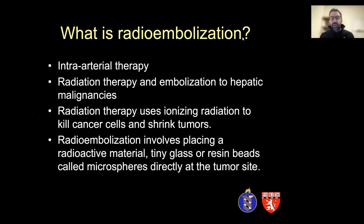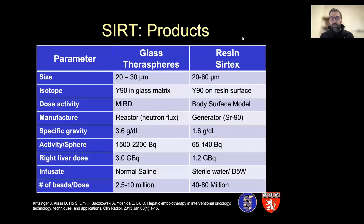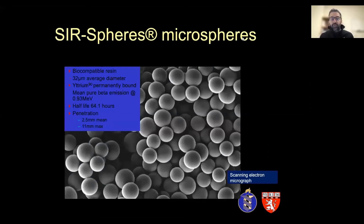Moving on to trans-arterial radioembolization — an intra-arterial therapy providing radiation therapy using a brachytherapy technique. The treatment goal is to selectively deliver a tumoricidal dose of beta radiation to the tumor while maintaining a low radiation dose to normal liver tissue. There are two types: glass microspheres and resin microspheres. Glass microspheres have a higher activity per sphere and are smaller; resin microspheres are larger with lower activity per microsphere. The microspheres are about 32 microns in average diameter, the yttrium-90 is permanently bound, mean energy is 0.93 MeV, and the half-life is about 64 hours. The beads only provide radiation up to one centimeter from where they land, making this quite safe for caregivers.